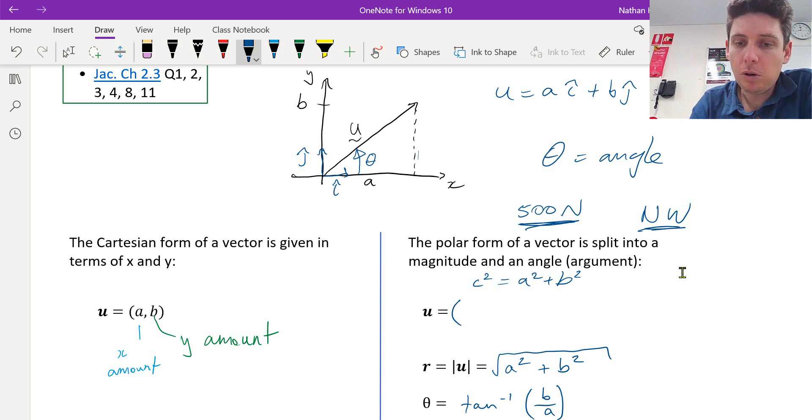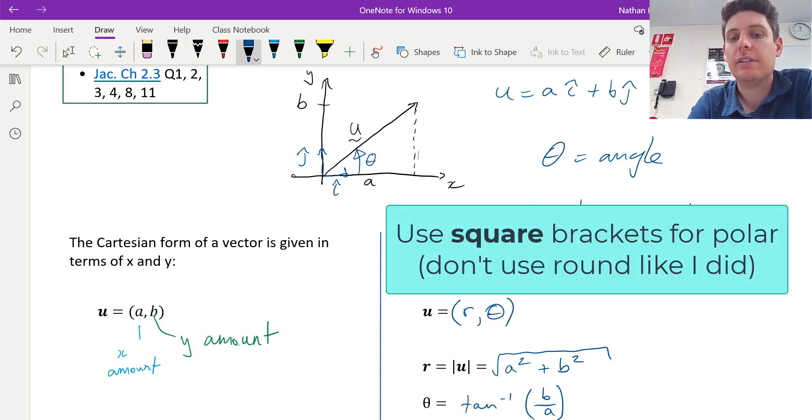So polar will have the magnitude first and then the angle or the argument second like that.